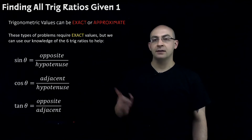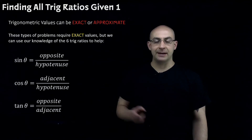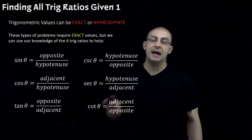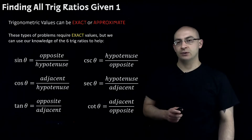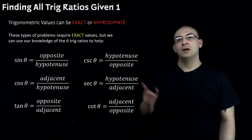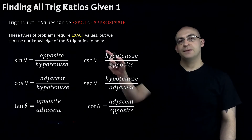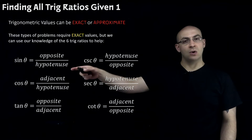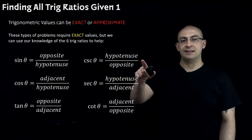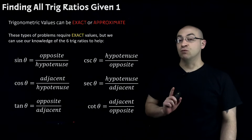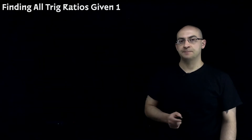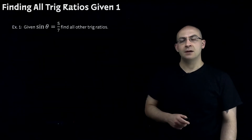Here they are again — the big three: sine, cosine, and tangent — and then the new three: cosecant, secant, and cotangent. Remember, opposite over hypotenuse for sine is exactly the opposite for cosecant, which is hypotenuse over opposite. That's going to be really helpful for us moving forward. So let's jump right into some examples.